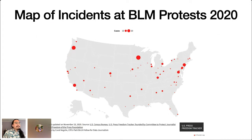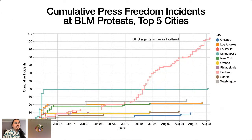Here's a map of press freedom incidents across the country put together using our data by a data journalist at one of our partner organizations, the Committee to Protect Journalists. And here's a chart I particularly like — we took the top 10 cities by number of incidents and charted them cumulatively over time. You can sort of see the narrative of how the protests escalated, starting in Minneapolis in late May and then quickly spreading to other cities. Portland is particularly interesting to follow because you can see a pretty steady stream of aggressions against journalists covering the protests almost immediately following the deployment of Homeland Security agents to Portland.